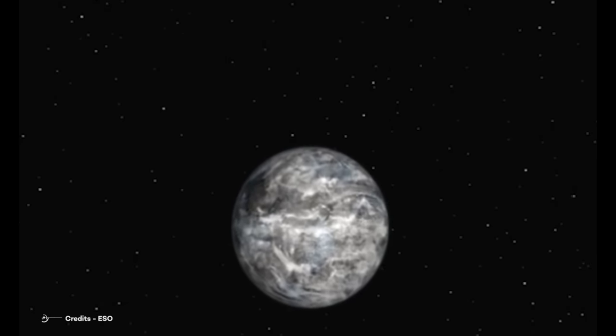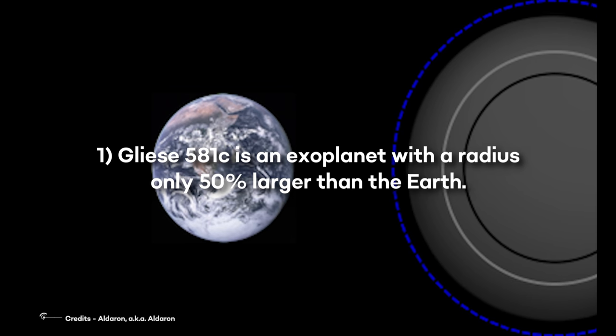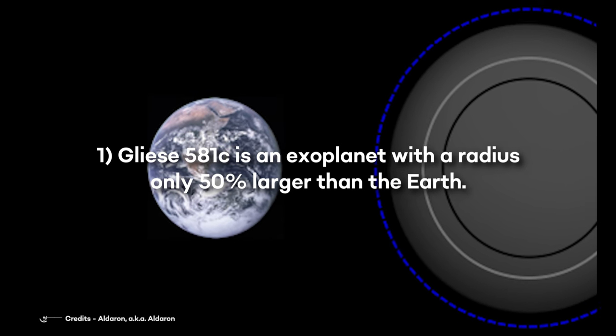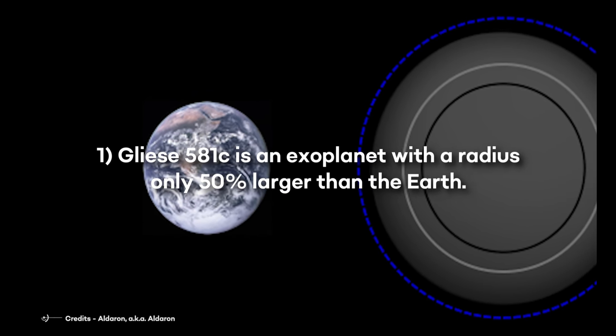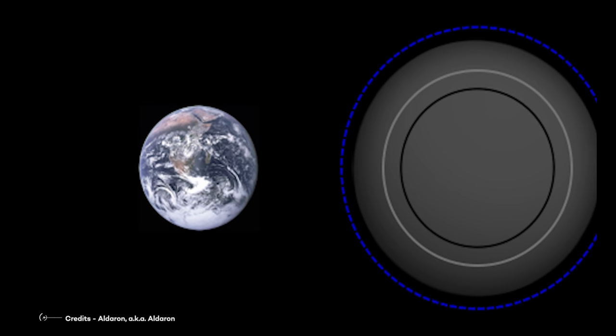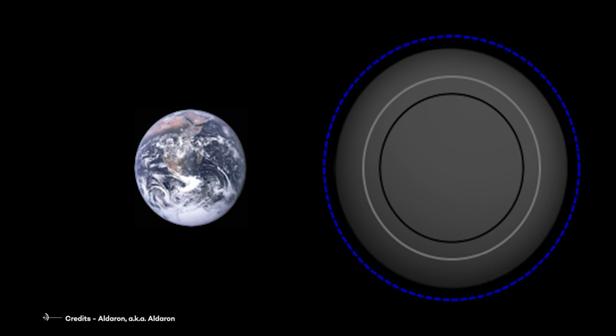Here are some of its characteristics. 1. Gliese 581c is an exoplanet with a radius only 50% larger than the Earth. This means that its radius is about 9500 km.